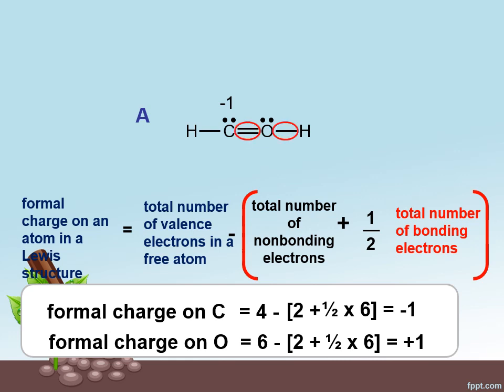The formal charges on hydrogen is one minus zero plus one equals to one.